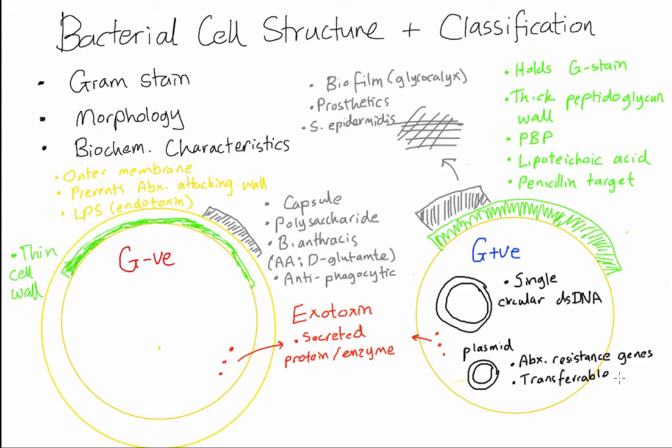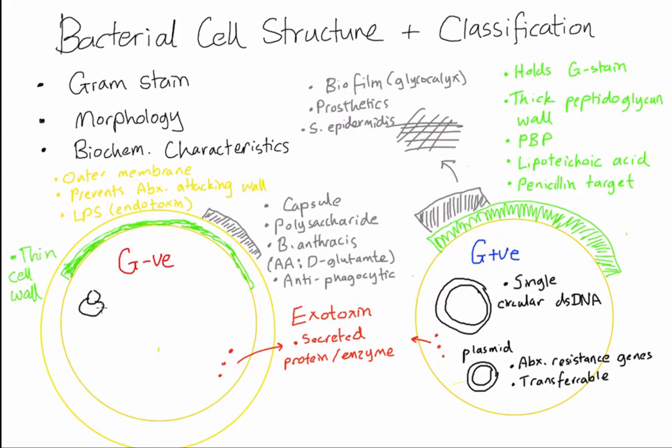The third intracellular structure is ribosomes. In bacteria it's 70S. It's made up of two subunits, 50S which can be attacked by erythromycin, and 30S which can be attacked by tetracycline.